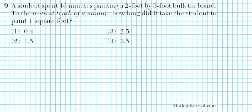Let's take a look at problem number 9. A student spent 15 minutes painting a two-foot by three-foot bulletin board. To the nearest tenth of a minute, how long did it take the student to paint one square foot? In this problem, we are going to use rates to see how fast the student spends painting. The student paints a two-foot by three-foot bulletin board in 15 minutes.